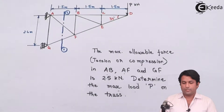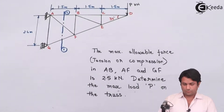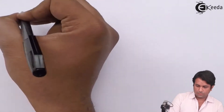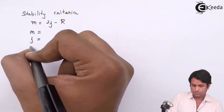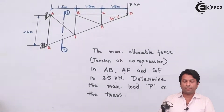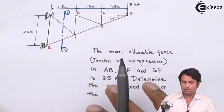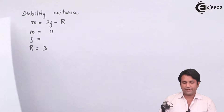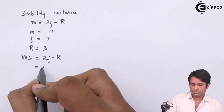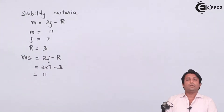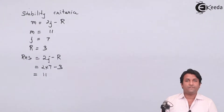We need to find out the force P, so the first thing we need to do is check for the stability criteria. We will calculate the number of members and the number of joints. We can see that the right-hand side equals the left-hand side — the number of members is 11 — so I can say that this is a perfectly stable truss.